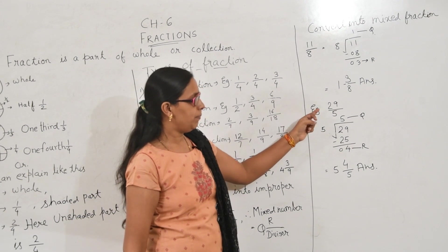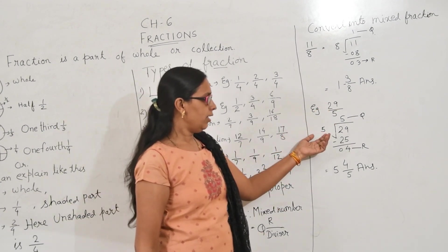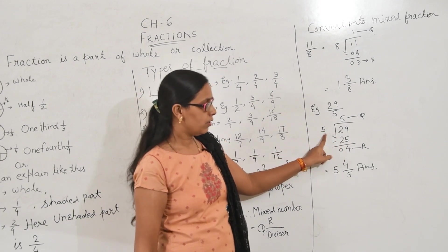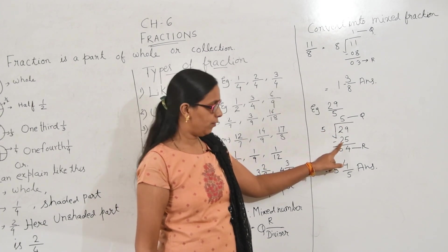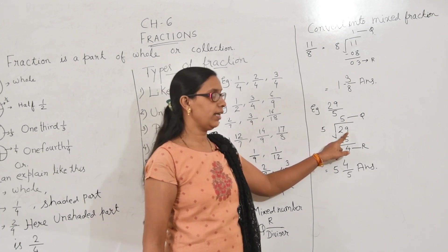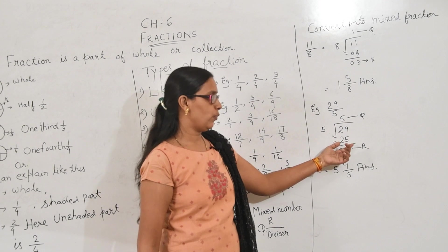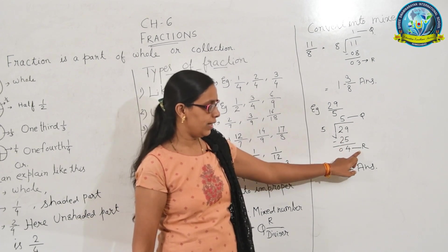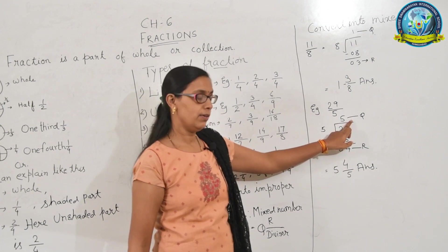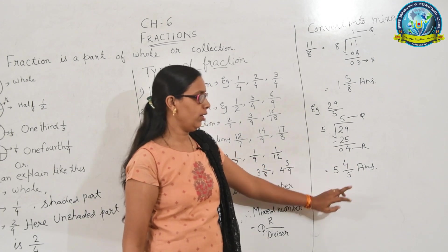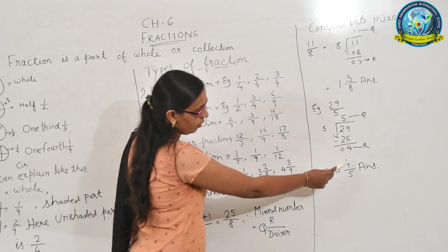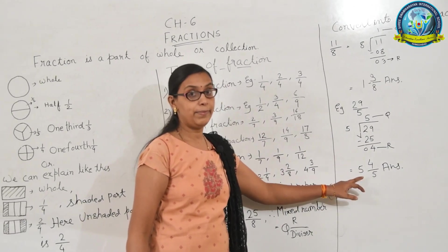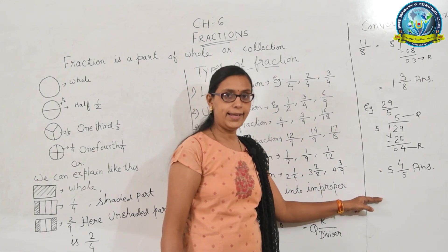Another example: 29 upon 5. Divisor is 5. We divide 29 by 5: 5 × 5 = 25, then 29 minus 25 = 4. So remainder is 4 and quotient is 5. The mixed fraction is written as 5 and 4 upon 5. So this is how we convert an improper fraction into a mixed fraction.